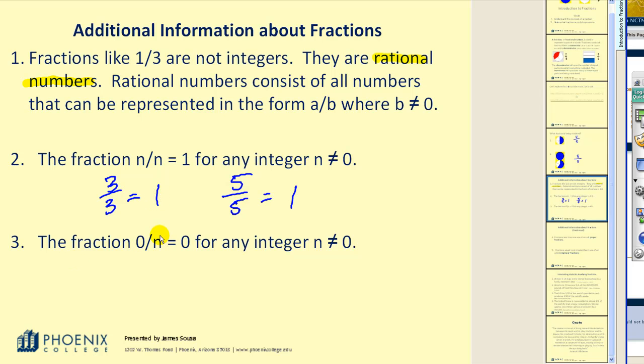Number three, the fraction zero over N is equal to zero for any integer N not equal to zero. Again, that's fairly logical. If I have three pieces, but I consider zero of them, of course, that would be zero.